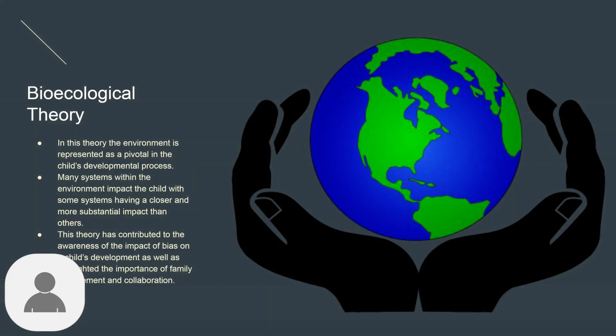Bioecological theory provides a comprehensive framework for understanding how various environmental systems influence child development. This theory recognizes that development occurs within multiple interconnected contexts, with some having more direct influence than others. It helps us understand how factors like bias and family engagement impact development.